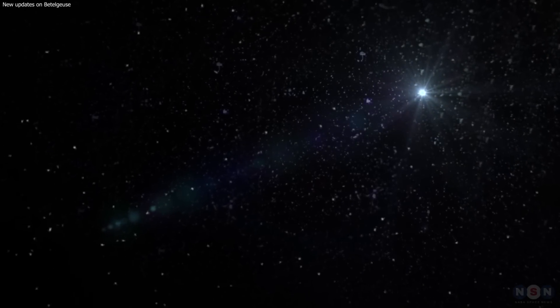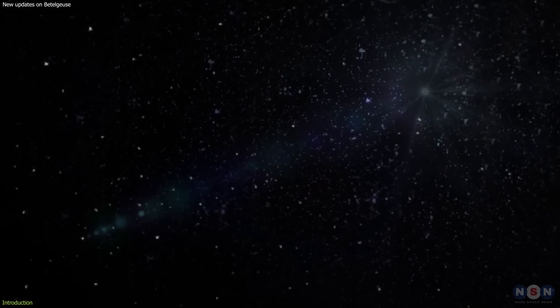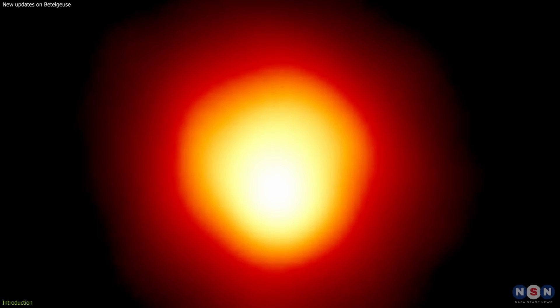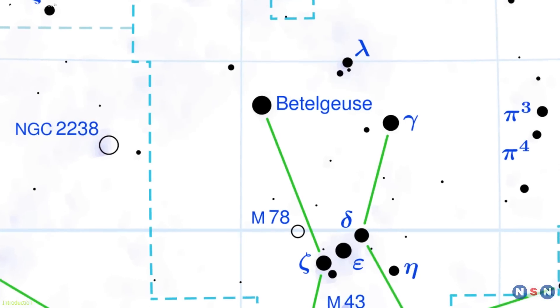Have you ever wondered what would happen if one of the brightest stars in the sky suddenly went dark? Well, that's exactly what happened to Betelgeuse, a red supergiant star in the constellation Orion.